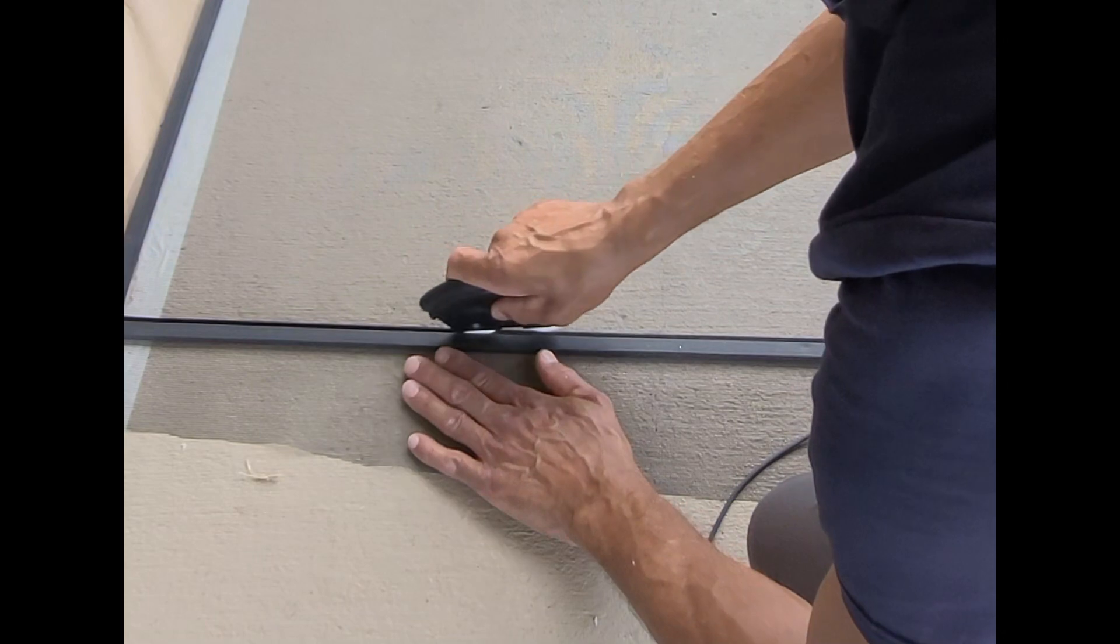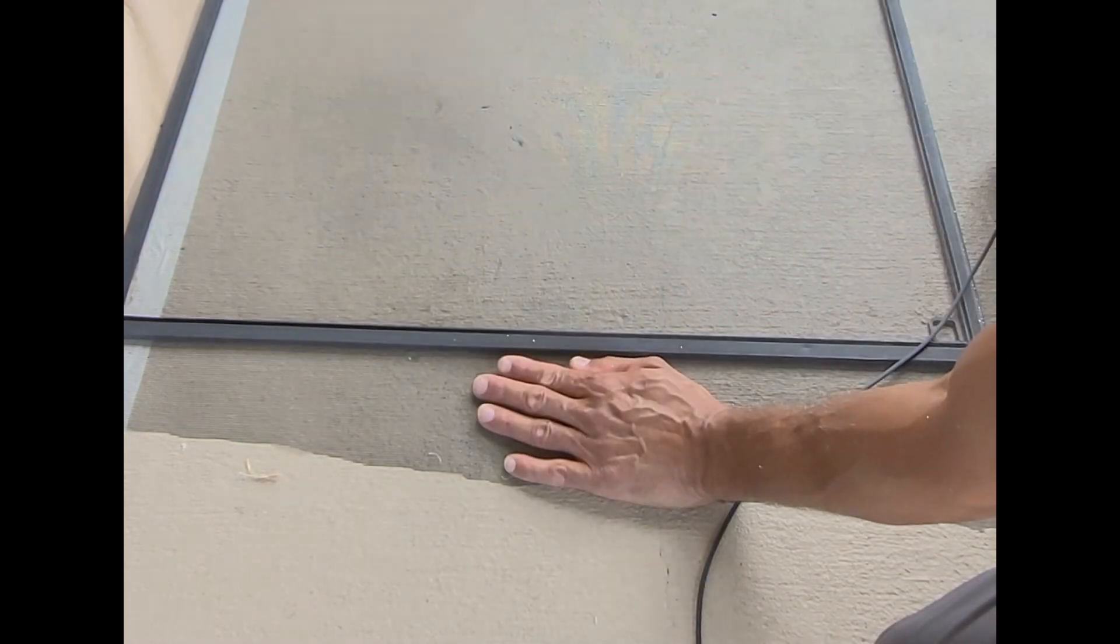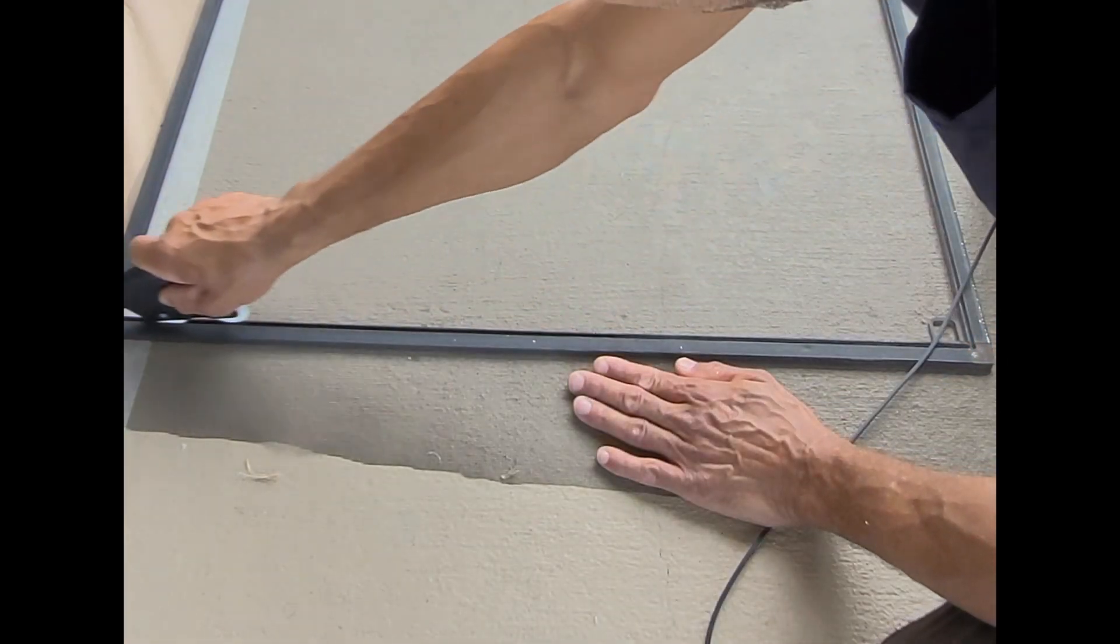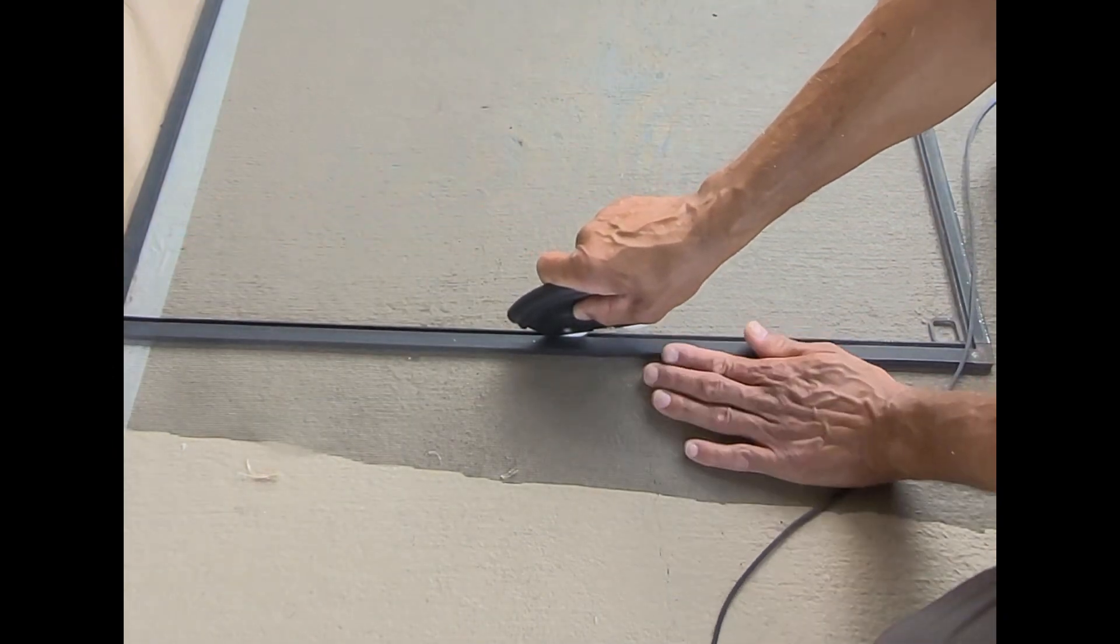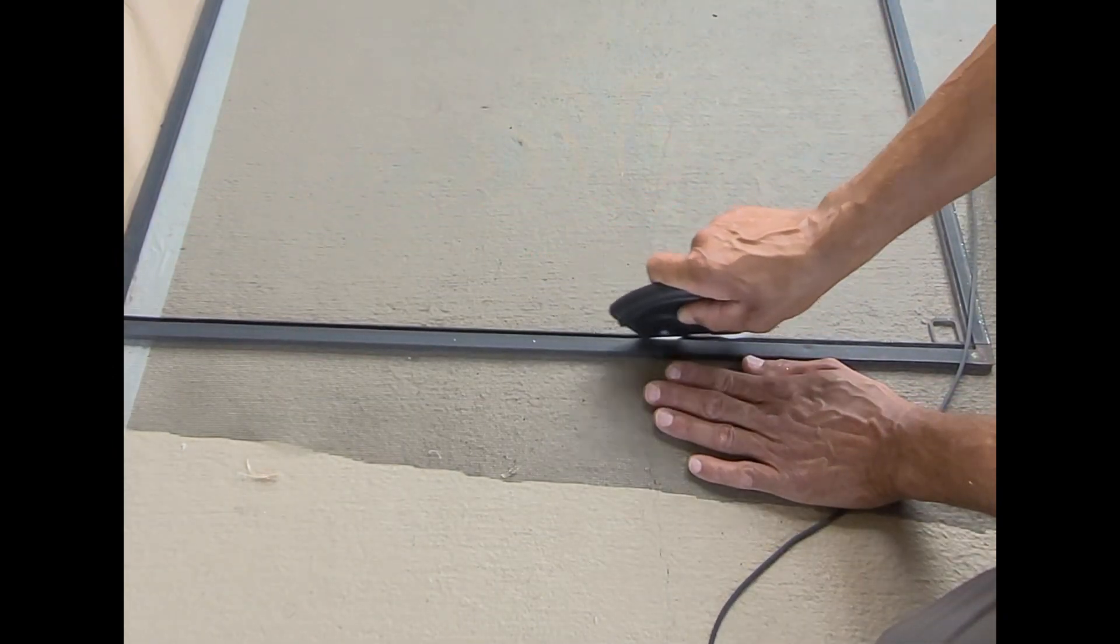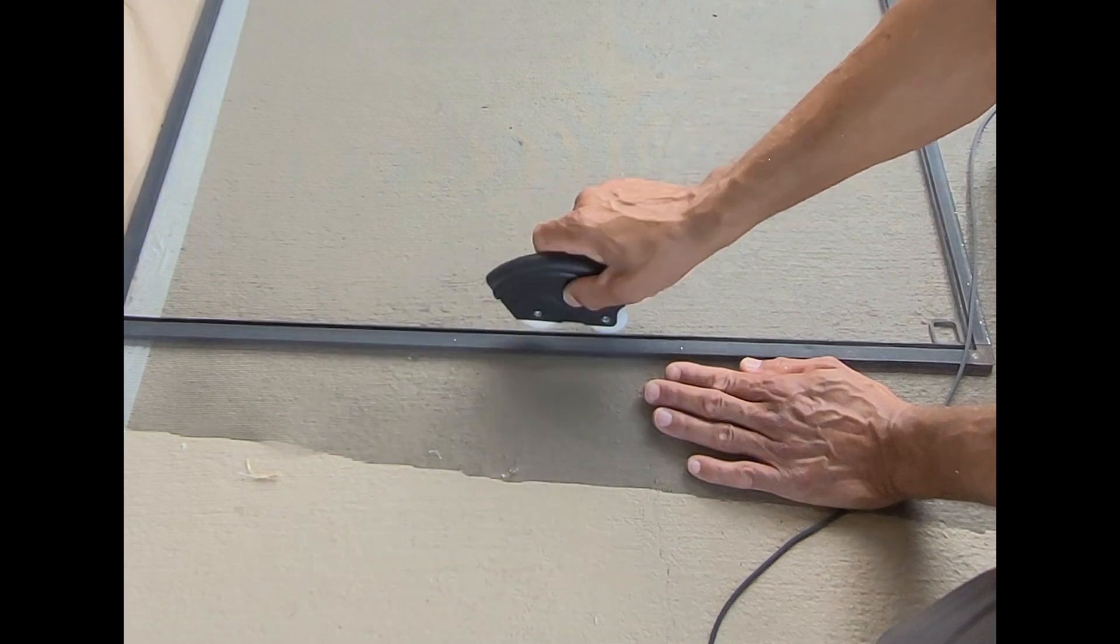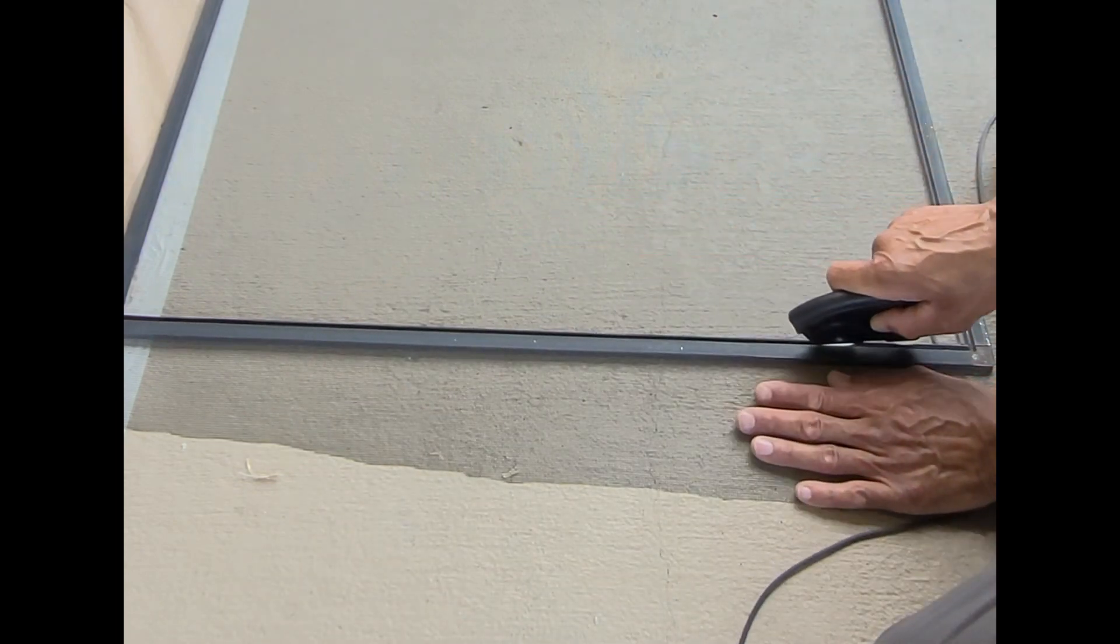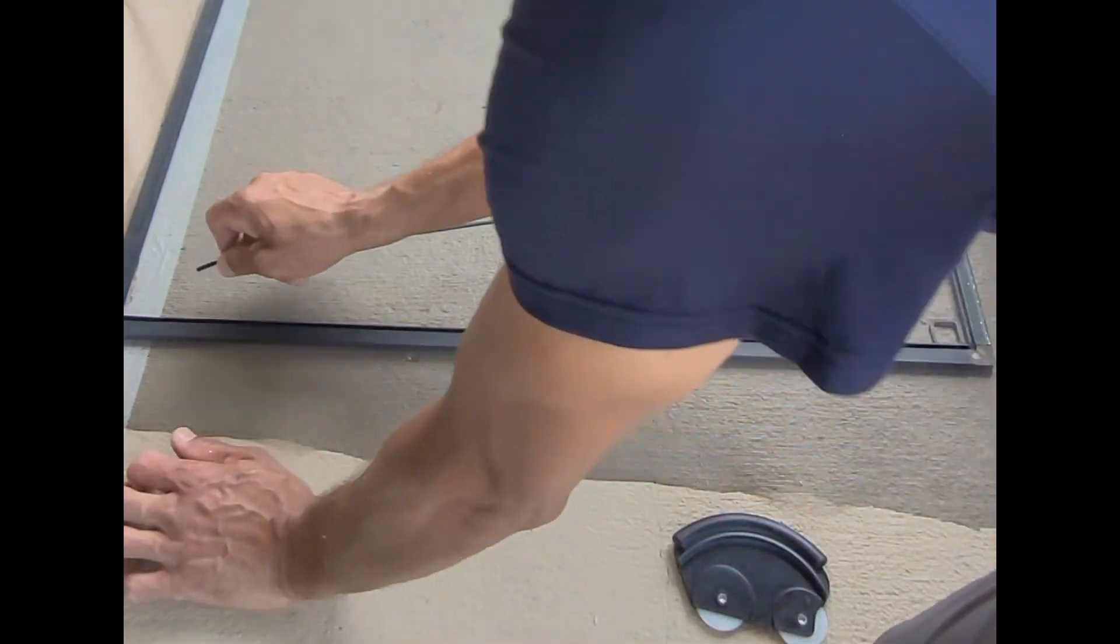And as you start to tuck this material in the channel, it will pull that side tight. Won't seem like it is, but you just keep your hand on this slack material out here on the outside of the frame while you're tucking it, and it will pull the screen tight. Now what we're going to do is set our spline in the channel and run it again.